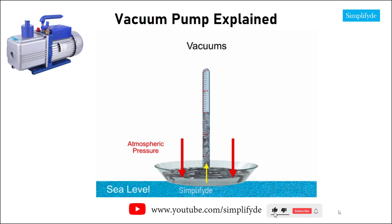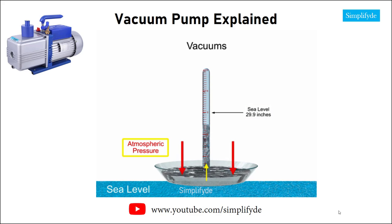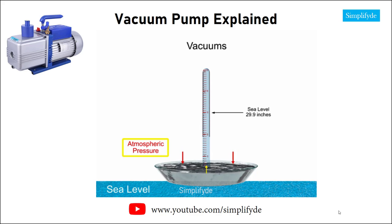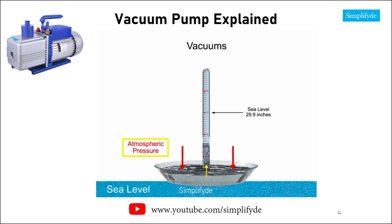At sea level, the elevation of mercury will stand at about 29.9 inches of mercury. As the atmospheric pressure decreases, the height of the mercury in the tube decreases. As the atmospheric pressure increases, the height of the mercury in the tube increases.